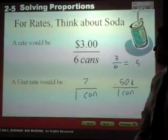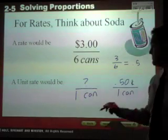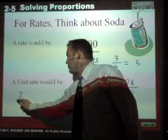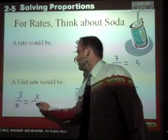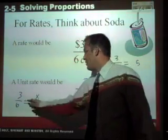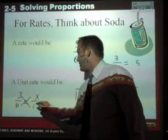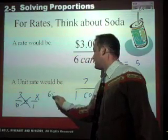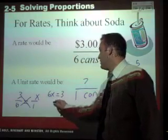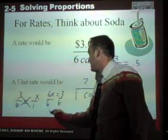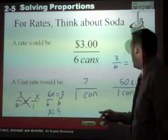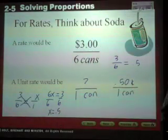You can also set up a proportion. And if you set up a proportion, three over six equals x over one. When you cross multiply, six x equals three, divide by six, x equals 0.5, which again is 50 cents.